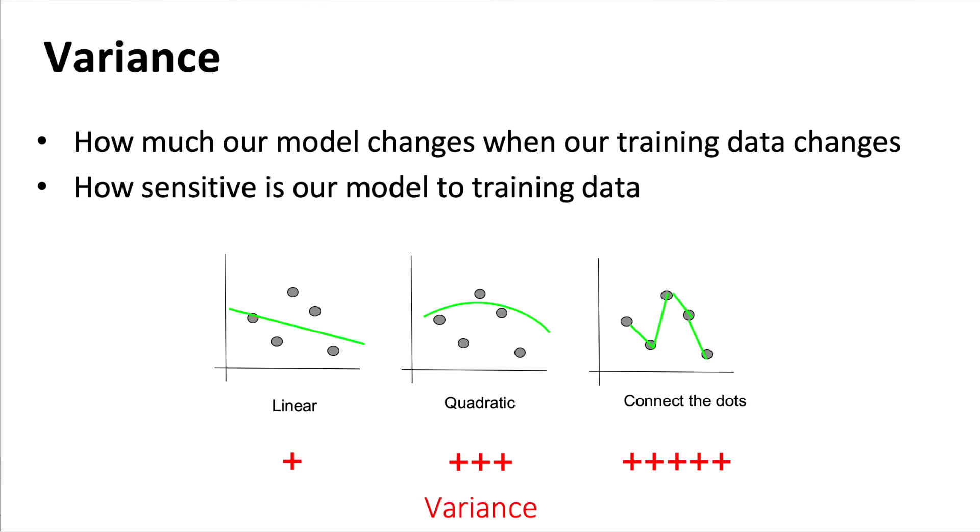On the other hand, the variance tells us how much our model changes when our training data changes. In other words, it's like how sensitive is our model to the changes in training data.